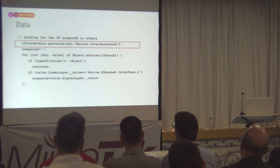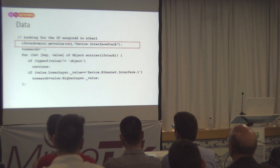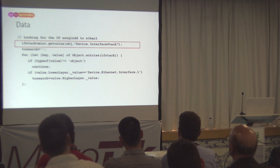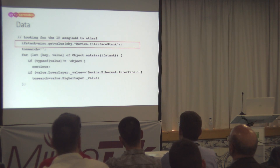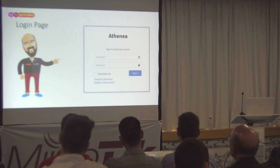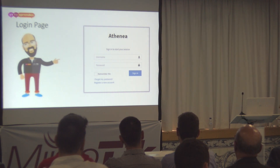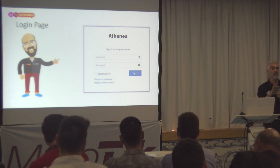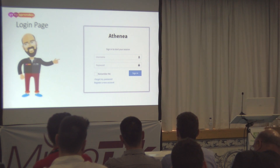This is a simple example we're using here. We have the object with the information and we want to retrieve from that tree the IP address associated with interface one. This is the login page of our web portal. Any questions at the moment? Is it too difficult? No? OK, let's continue.